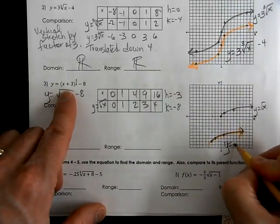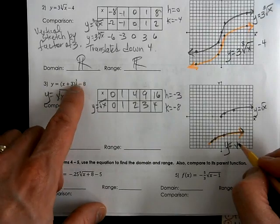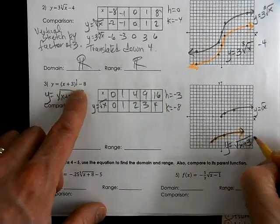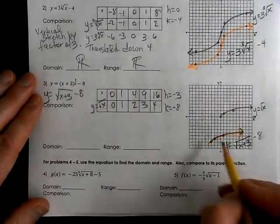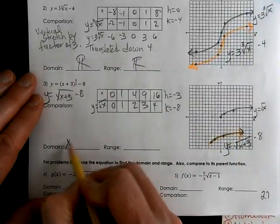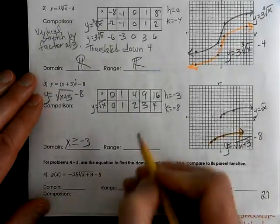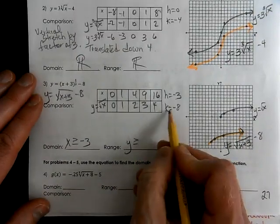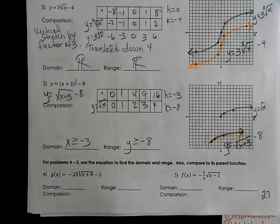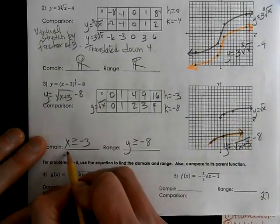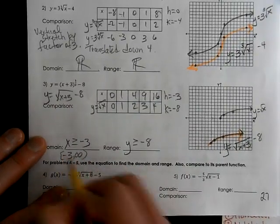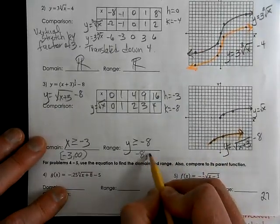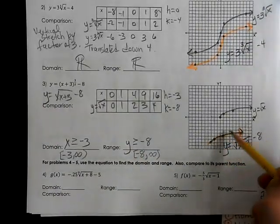And that's y equals the square root — because the denominator is a 2, it's 1 over 2, square root — of x plus 3 minus 8. Since my h value is negative 3, our domain is x greater than or equal to negative 3. And our range is y greater than or equal to negative 8. In interval notation, the smaller number is negative 3 to infinity, and negative 8 is the smallest y value, with infinity as the largest since it's going in an upward motion.